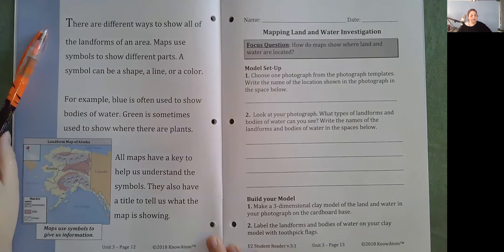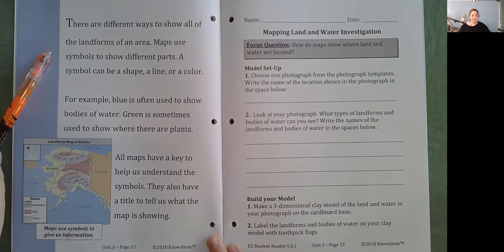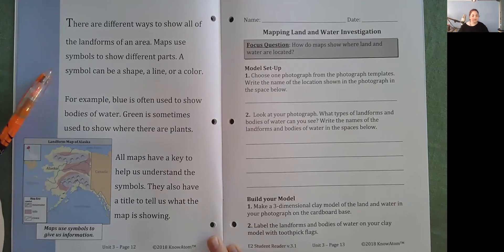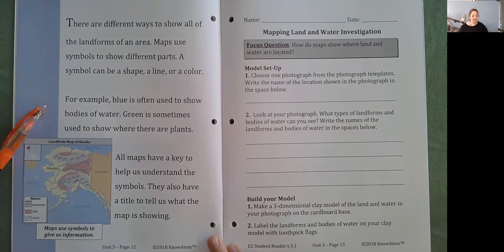There are different ways to show all of the landforms of an area. Maps use symbols to show different parts. A symbol can be a shape, a line, or a color. For example, blue is often used to show bodies of water. Green is sometimes used to show where there are plants. All maps have a key to help us understand the symbols. They also have a title to tell us what the map is showing.